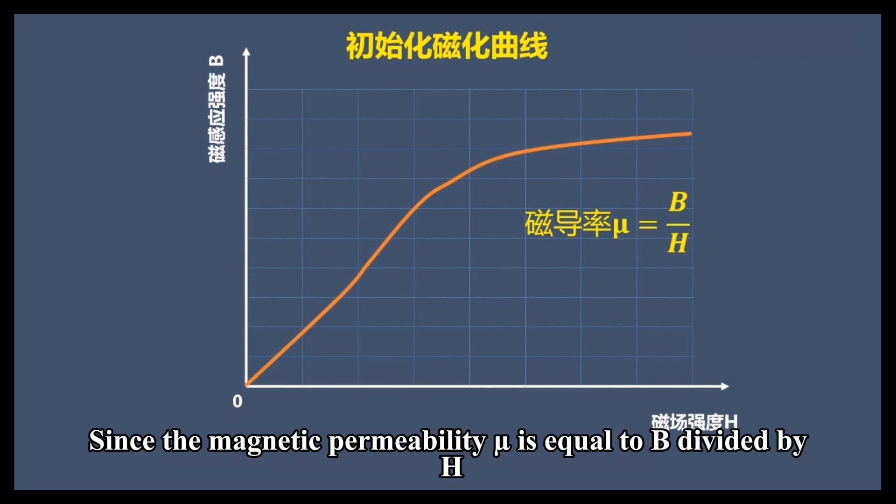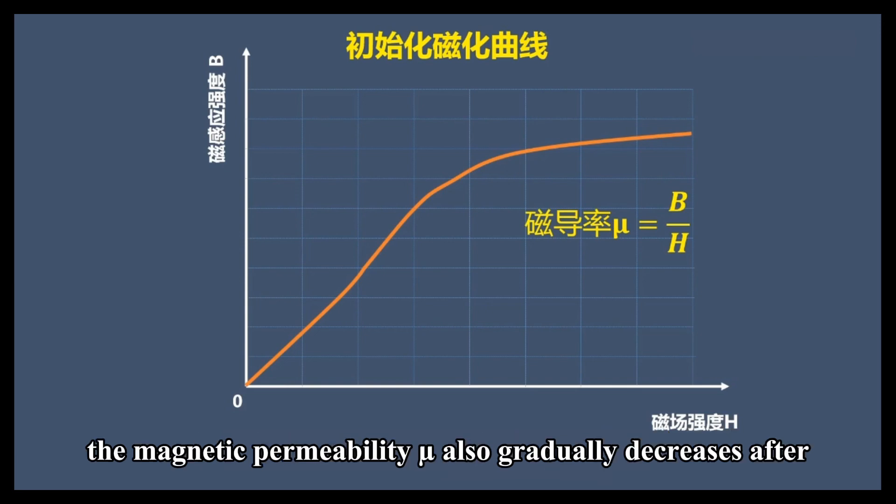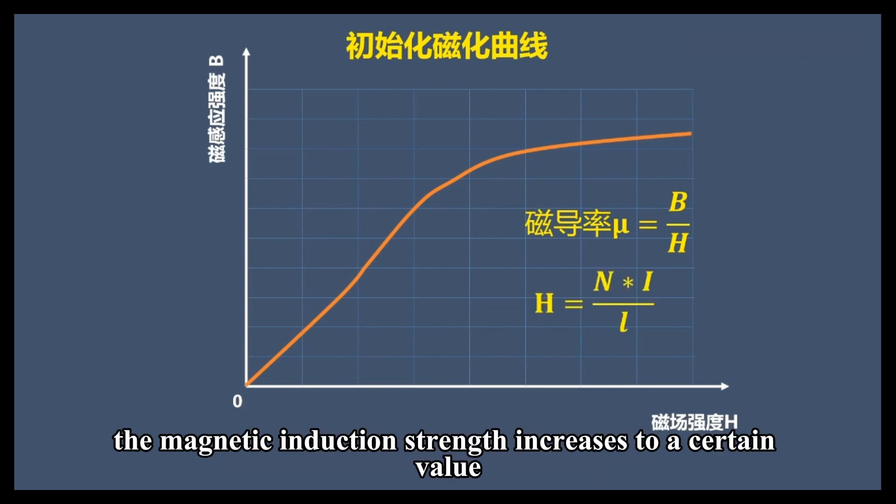Since the magnetic permeability is equal to B divided by H, the magnetic permeability also gradually decreases after the magnetic induction strength increases to a certain value.